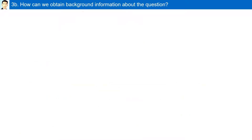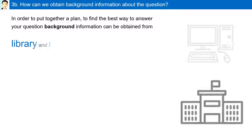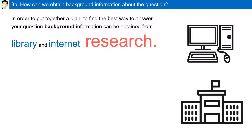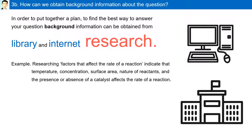How can we obtain background information about a question? In order to put together a plan to find the best way to answer your question, background information can be obtained from library and internet research. For example, researching factors that affect the rate of a reaction indicates that temperature, concentration, surface area, nature of reactants, and the presence or absence of a catalyst affect the rate of a reaction.